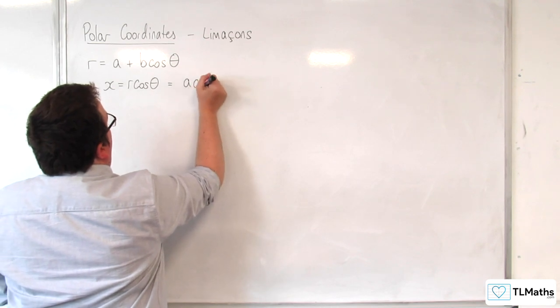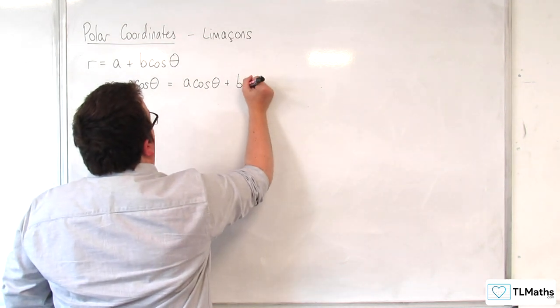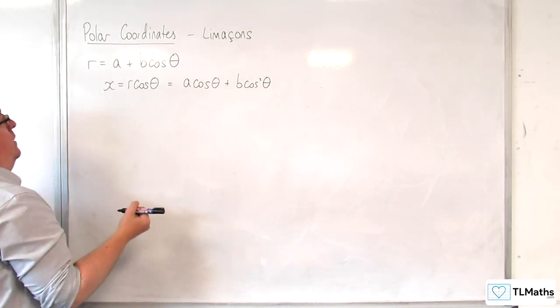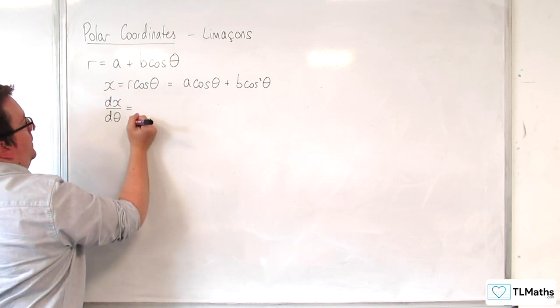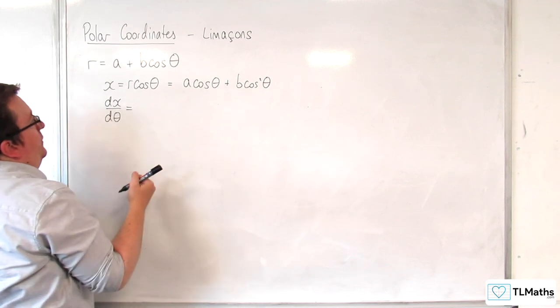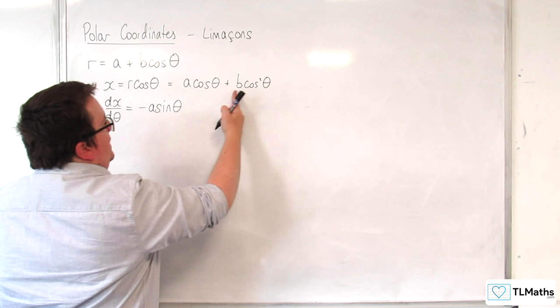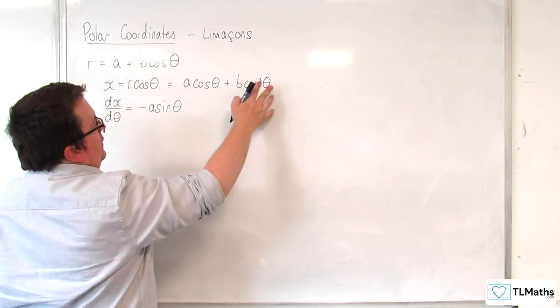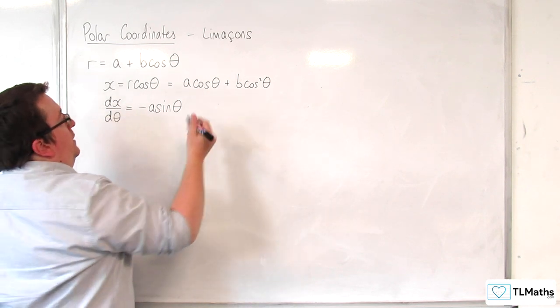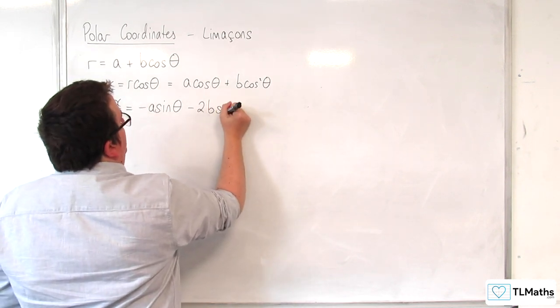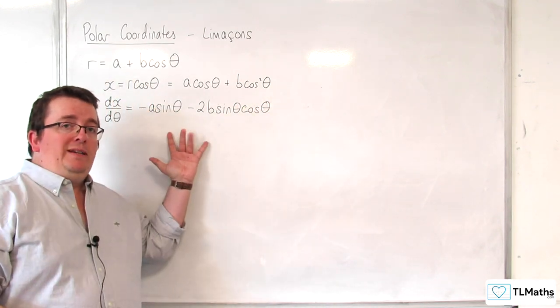So, I would have a times cosine theta, plus b cosine theta times cosine theta, so b cosine squared theta. Then I could work out dx by d theta. Differentiating this, I would get minus a sine theta, and then differentiating this, the 2 comes down to the front, the derivative of cosine comes outside using chain rule. So, we get minus 2b sine theta cosine theta.